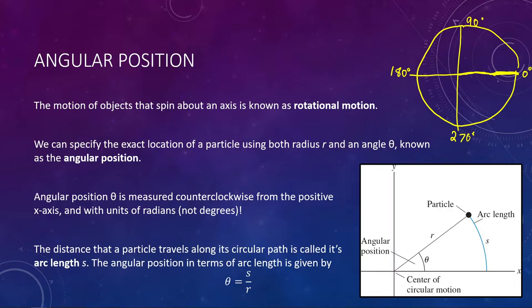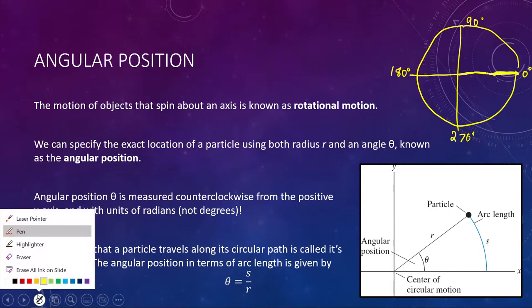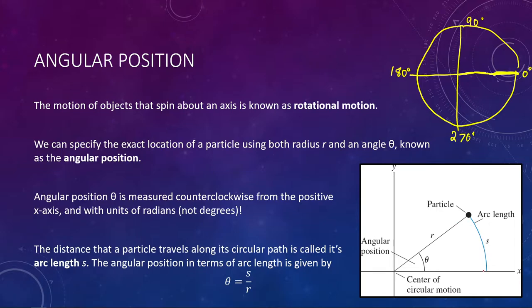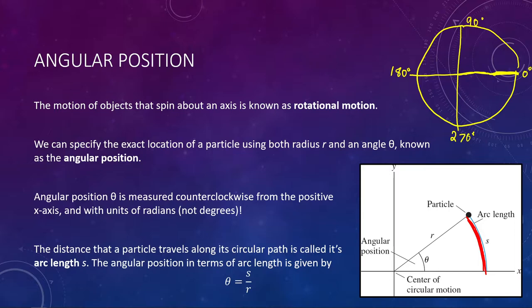Angular position is the angle through which your object moves. As it moves along that path, it sweeps out what we call an arc length. As the particle moves from zero degrees at the x-axis, it sweeps out this length of an arc. We give that the symbol s for arc length. Those two quantities along with radius are related by the equation: theta, or angular position, is your arc length s divided by the radius r.